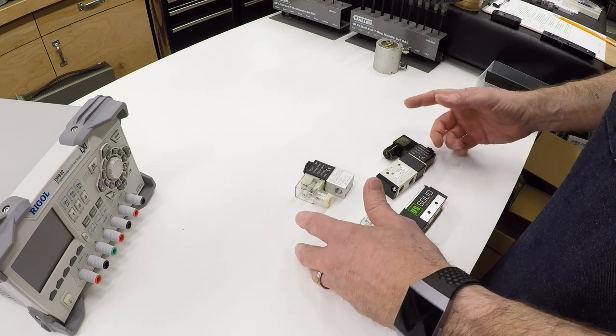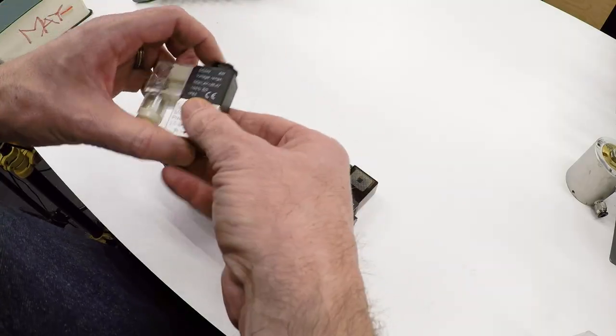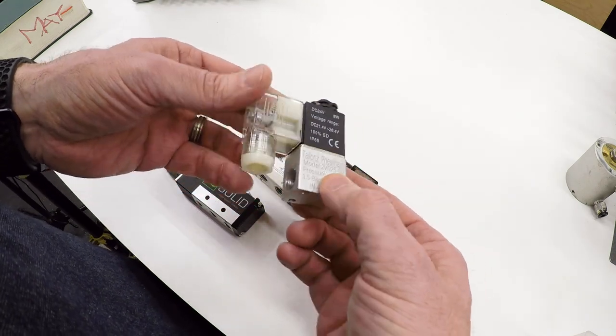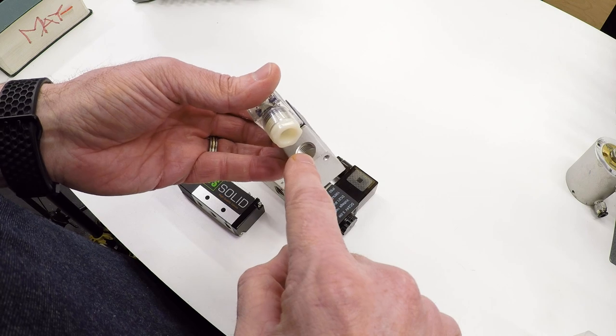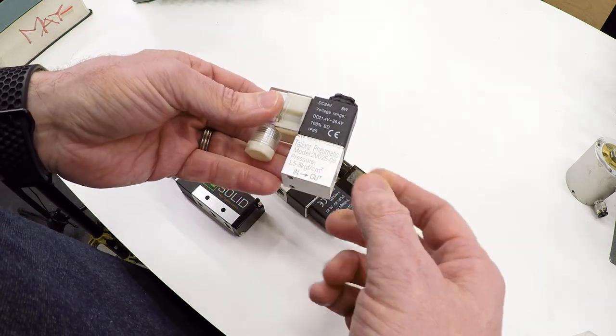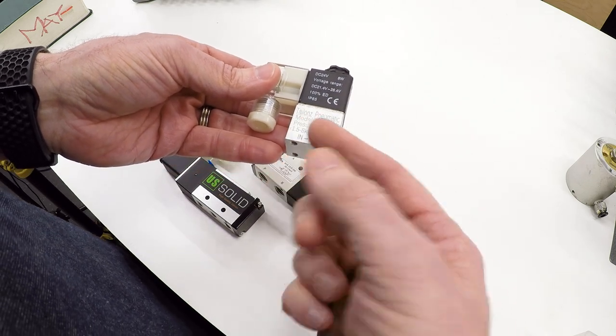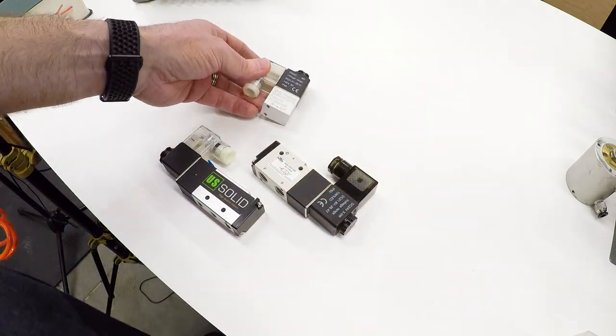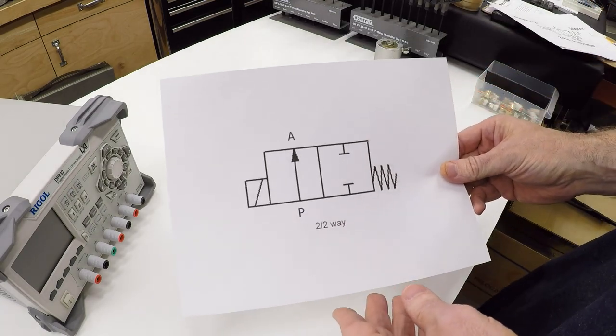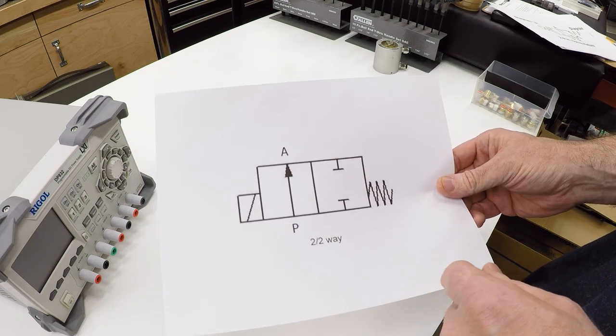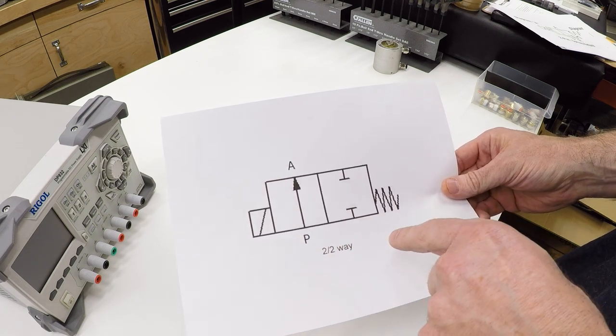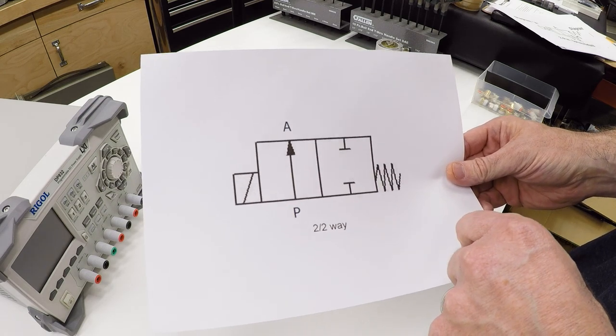There are three basic types that you will run into. The first one is what's commonly referred to as a 2-2 valve, and that means it has two ports, an inlet and an outlet port, and it has two positions. In the case of a 2-2 valve, it's either on or off. Every valve should come with a diagram that describes the functionality of the valve.